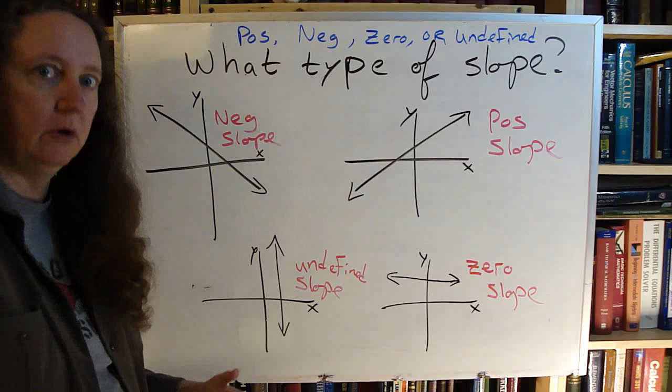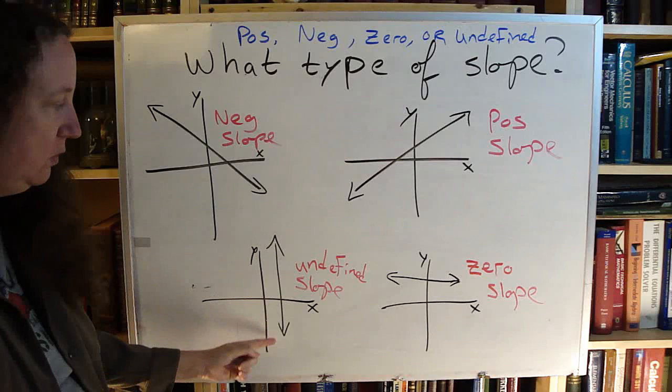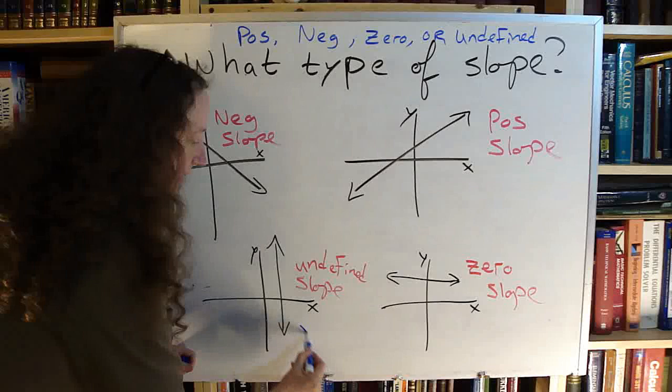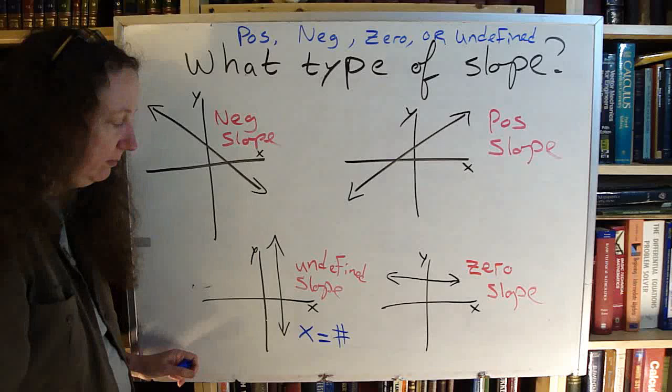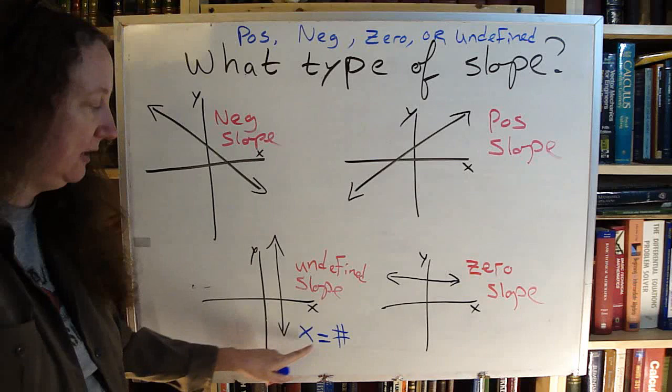Undefined slope, vertical line, the equation is going to be x equals some number. Don't know what the number is, but x equals a number. No y at all involved in this equation. Just x equals a number.